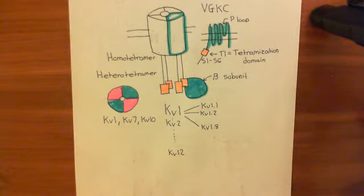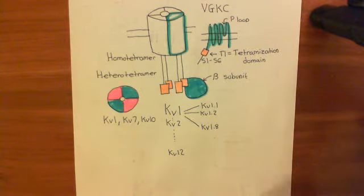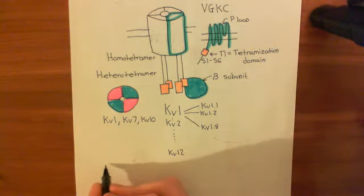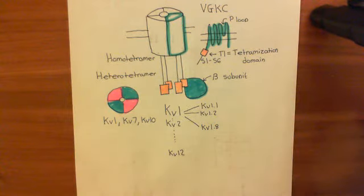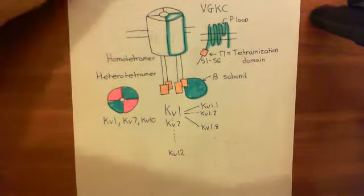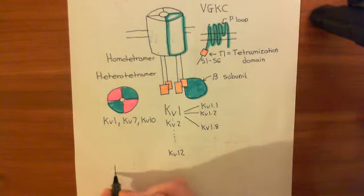Voltage-gated potassium channels are a complicated business. Now we're going to move on to the actual voltage-gated potassium channels that we find within cardiac muscle cells — specifically those which are going to cause the little blip in the action potential, the ones that are going to be activated directly after the voltage-gated sodium channels have closed. There are two of them that are important.